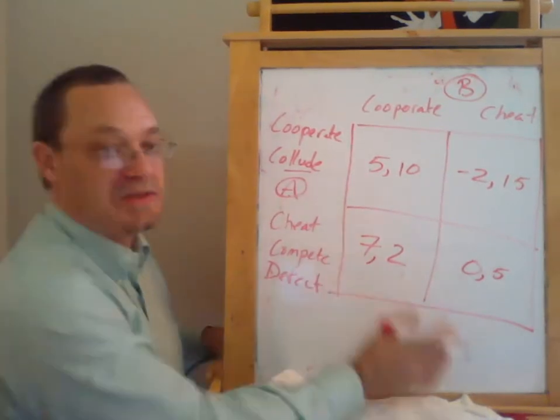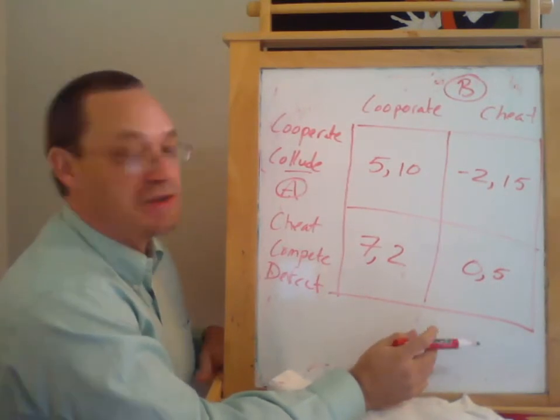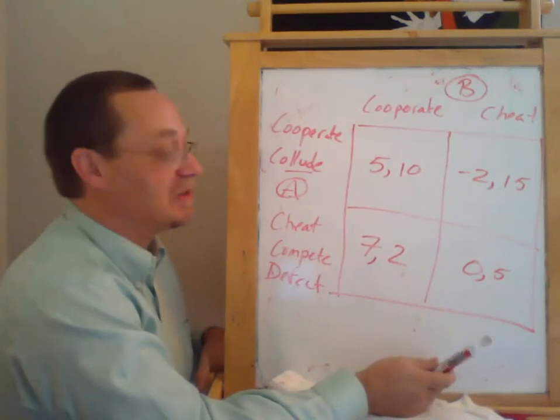So notice this is not symmetric in this game. Firm B is generally better run, sort of like the Target in our previous example here.